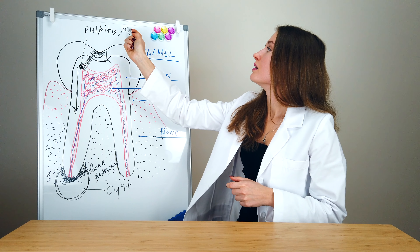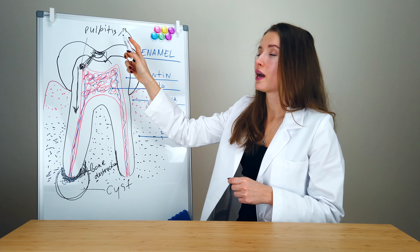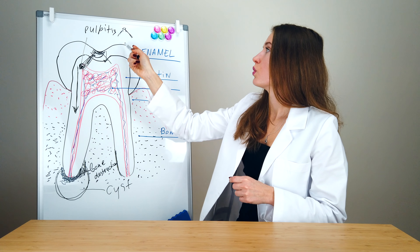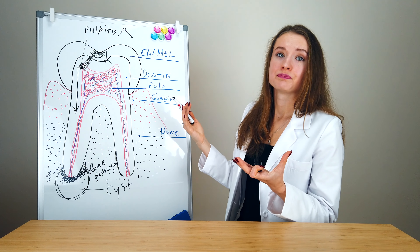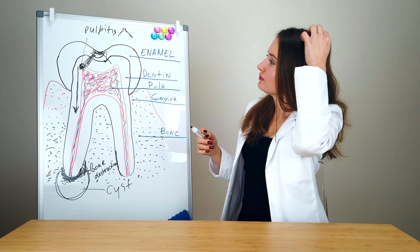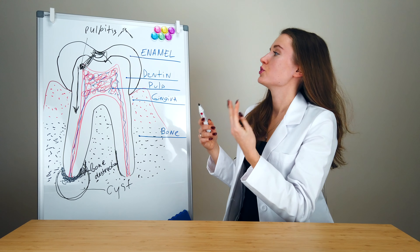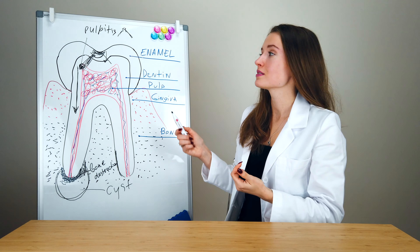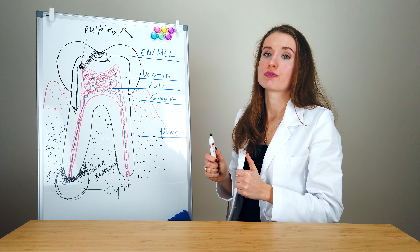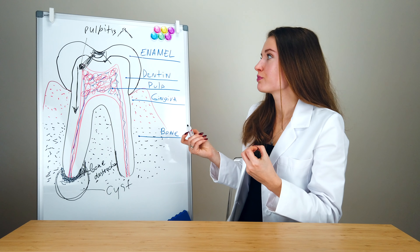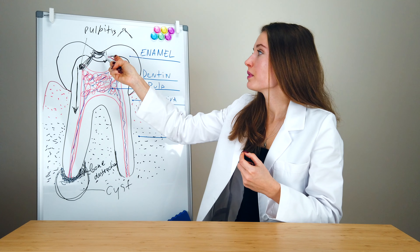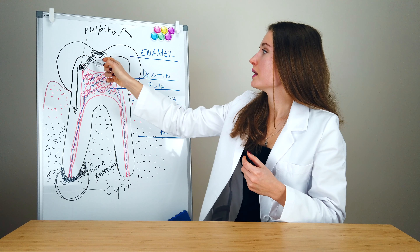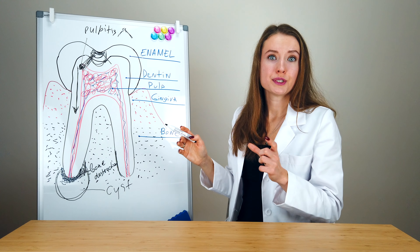Usually when you come to the dental office, you are complaining of severe or light pain, and it is because you already have a defect. In most cases, this defect is a carious process, or tooth decay. This process usually starts from the pits on the tooth or from the fissures on the occlusal surface of the tooth.